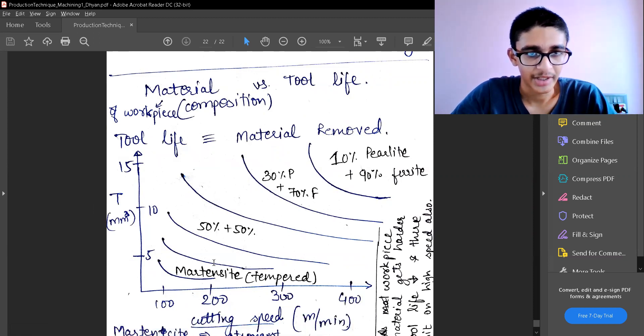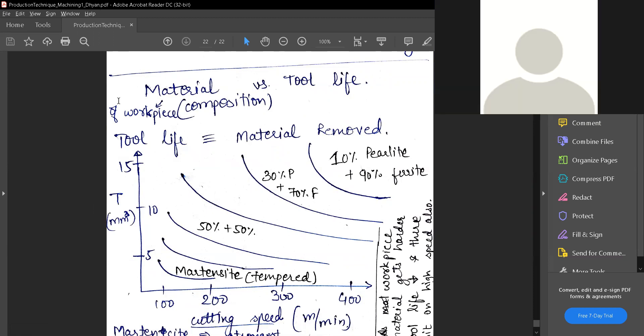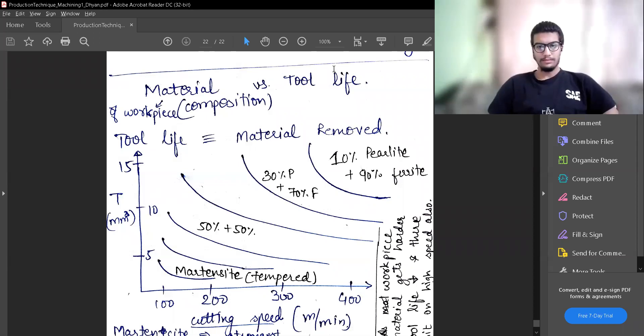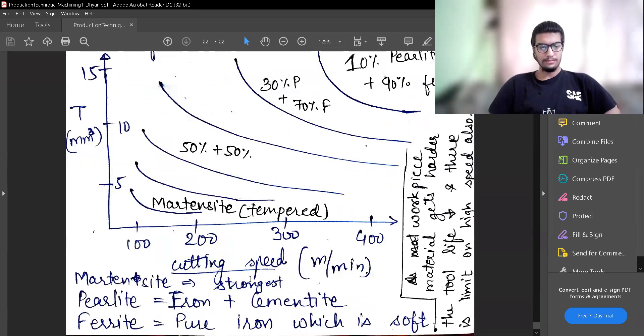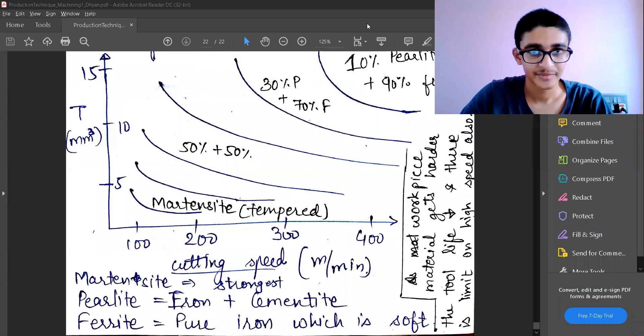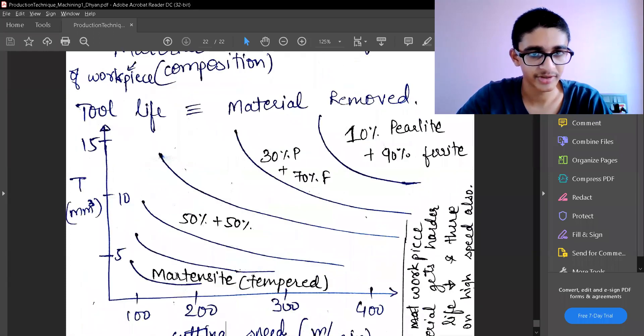And now I'm going to take different considerations of materials of workpiece. So there are material properties on different types of materials which are shown on this graph. The pearlite, ferrite, and martensite are three different kinds of material which we are taking, and the martensite is a tempered martensite.